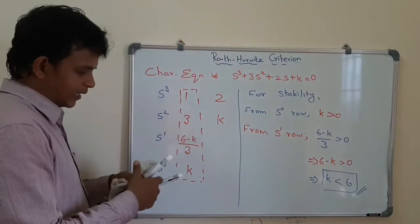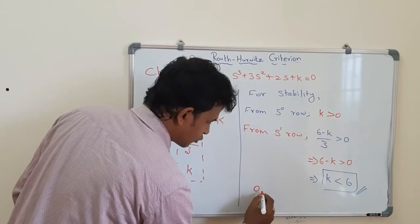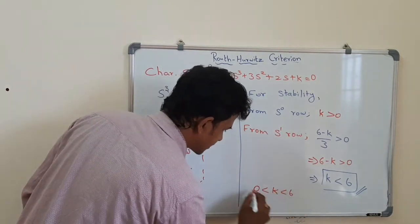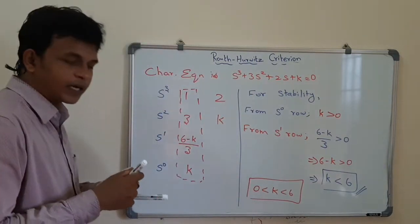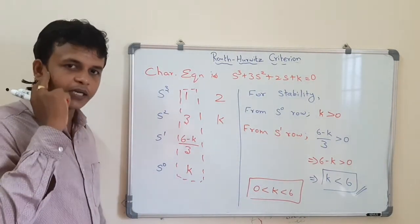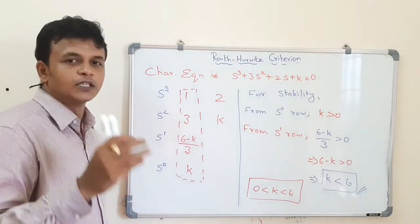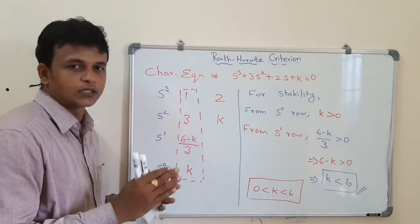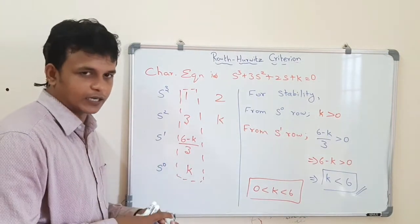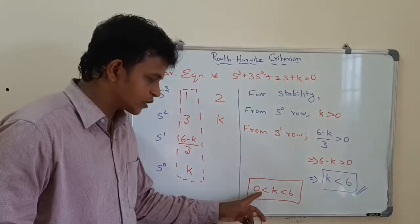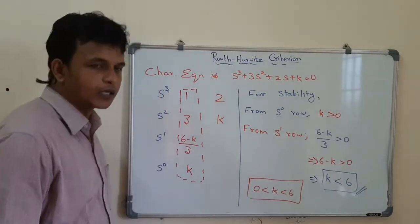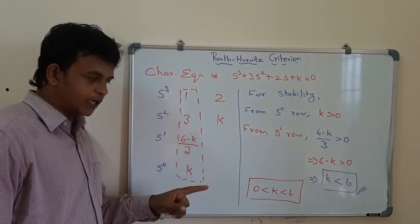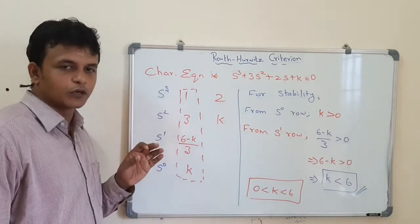To maintain stability, the range of k is: k should be greater than 0 and less than 6, i.e., 0 less than k less than 6. At k equal to 6 the system becomes marginally stable. So the stability range is between 0 and 6.